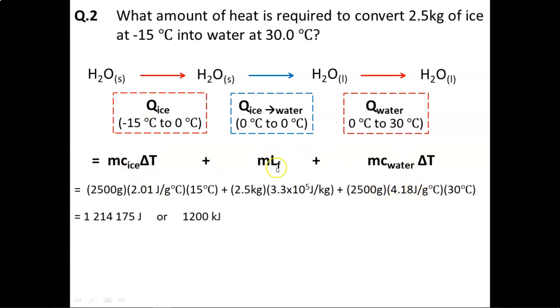Meanwhile, the latent heat of fusion is 3.3 times 10 to the power of 5 joules per kilogram for turning ice into water, melting it. Again, these two values are things that will be given to you on a test or something that you'd have to look up in a chart. And once we add up these three values, we get about 1200 kilojoules of energy required.